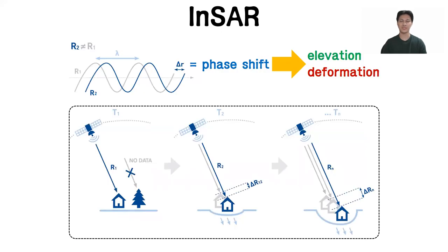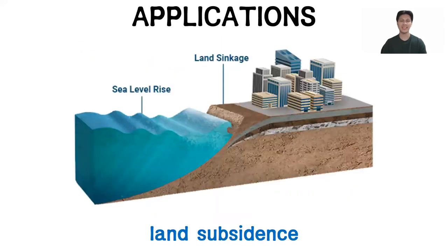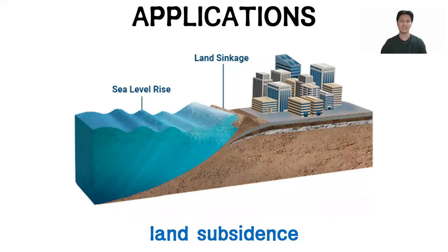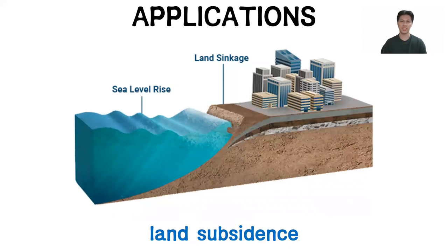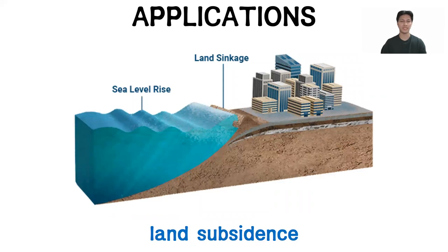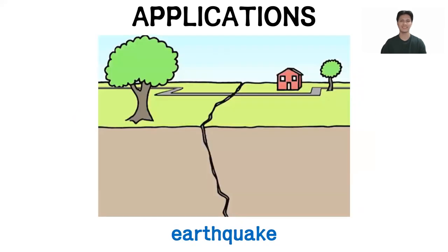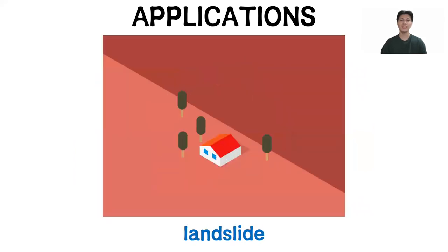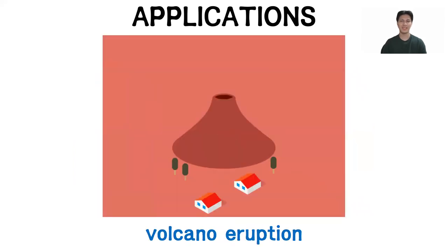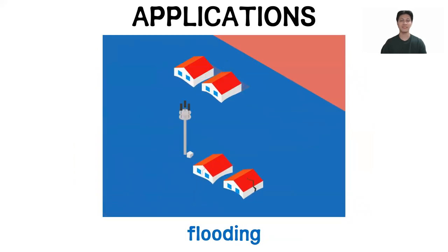InSAR is simply the interference between two SAR images acquired over the same location at different times. The phase difference of these two SAR images can be used to generate elevation models and quantify ground deformations. Hence, InSAR can be applied in various geohazard observation and monitoring purposes, including land subsidence and sea level rise, earthquake, landslide, volcano eruption, and flooding.